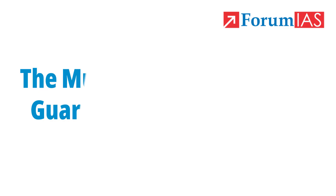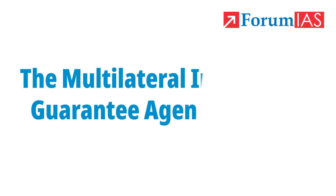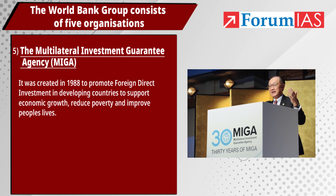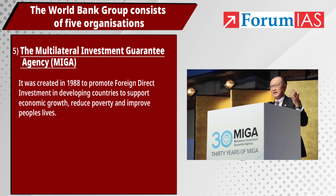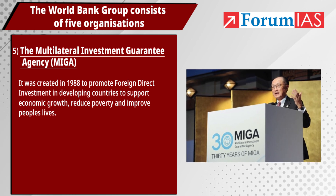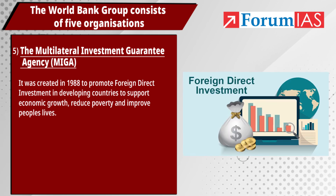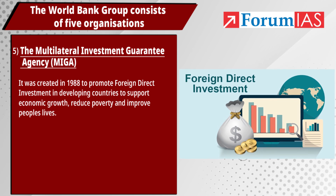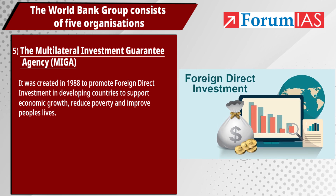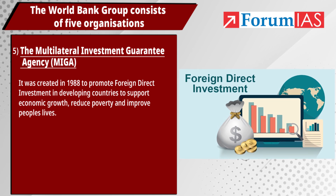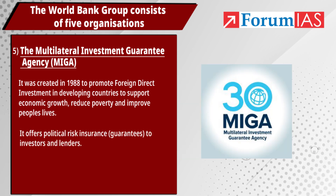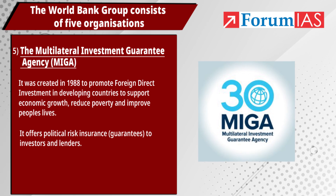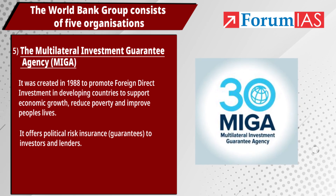The fifth organization is the Multilateral Investment Guarantee Agency (MIGA). It was created in 1988 to promote foreign direct investment in developing countries, to support economic growth, reduce poverty, and improve people's lives. It offers political risk insurance to investors and lenders.